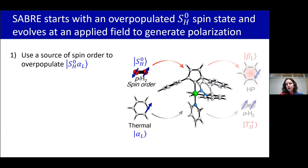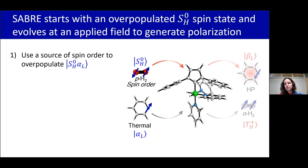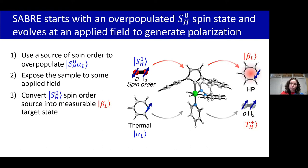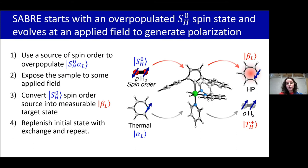SABR uses parahydrogen to overpopulate an initial singlet hydride state on our polarization transfer complex. Our target nucleus is a 15N — in this representation it can be any spin-half heteronucleus or proton. Moving forward, I'll use L to represent an arbitrary ligand target nucleus. This target nucleus is initially thermally distributed between alpha and beta states, but we're targeting unidirectional spin flips. So the initial state chosen here is singlet hydrides with an alpha target nucleus. We expose this initial state to some magnetic field conditions to facilitate transfer of spin population, and then our overpopulated singlet spin state is converted into an overpopulated magnetized state — in this case, beta on the ligand nucleus. The reversible exchange bit of SABR then replenishes that initial state and the process can begin again.